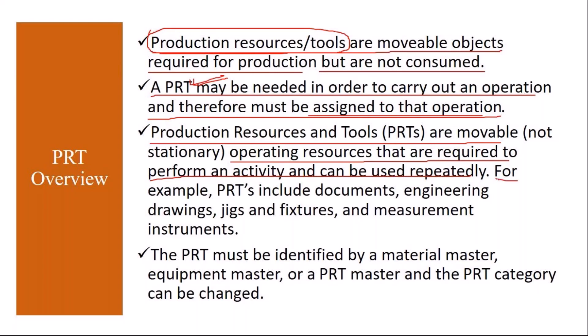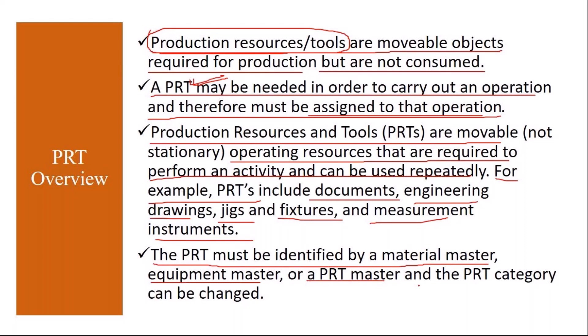Examples of PRTs include documents, engineering drawings, jigs, fixtures, and measurement instruments like vernier calipers or spanners used during production. The PRT must be identified by a material master, equipment master, or a PRT master, and the PRT category can be changed if required.